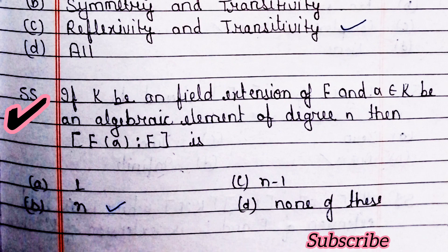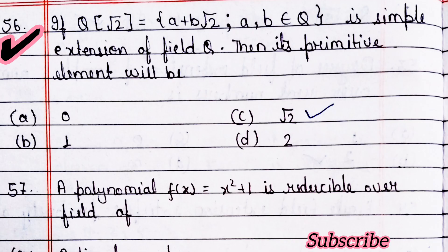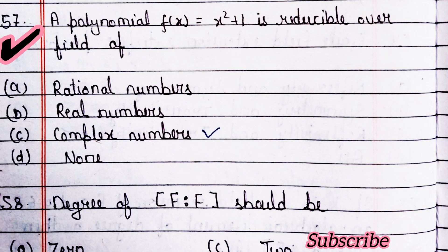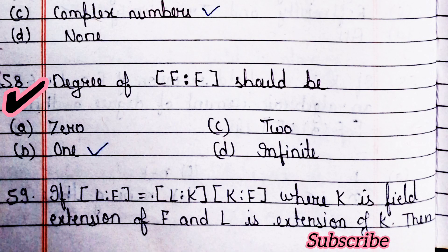Next question: if k is a field extension of F and alpha belongs to k is an algebraic element of degree n, then this equals n — option B is right. Next question: if Q(√2) is a simple extension of field Q, then its primitive element will be √2 — option C is right. A polynomial f(x) is reducible over the field of complex numbers — option C is right. The degree of f(f) should be one — option B is right.